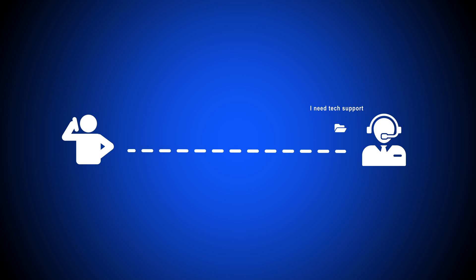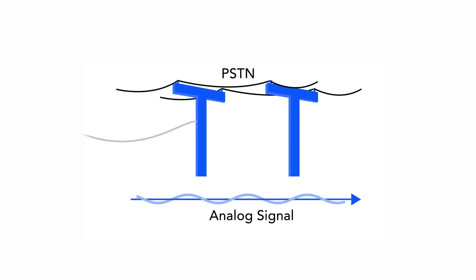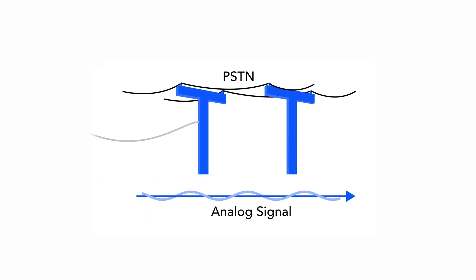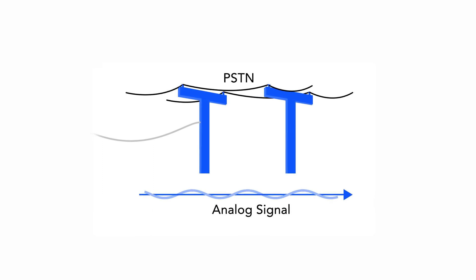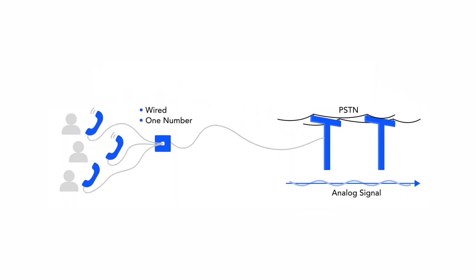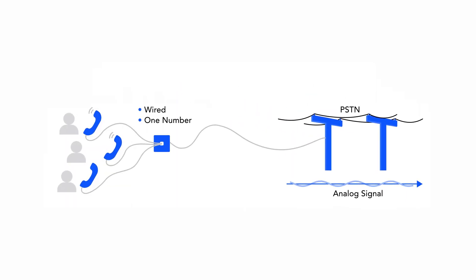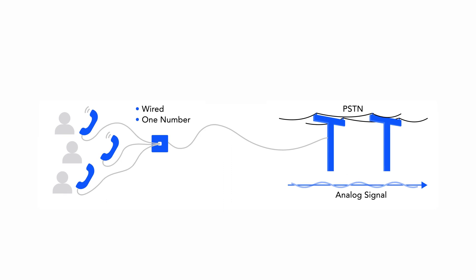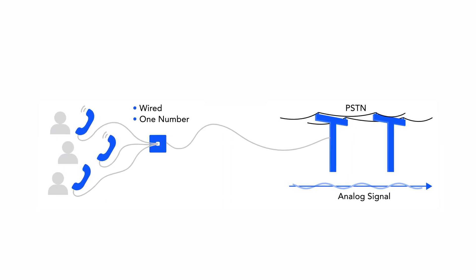This process repeats itself back and forth throughout the VoIP phone call. On the other hand, traditional analog phones require a physical connection to the PSTN to make and receive calls via either copper wiring or fiber optic cabling.